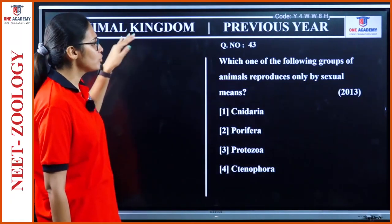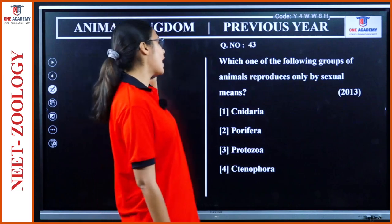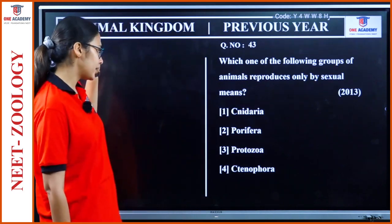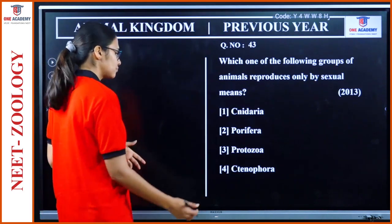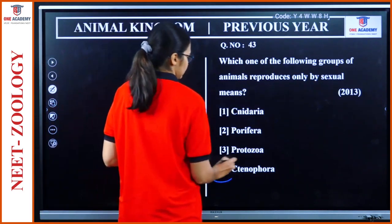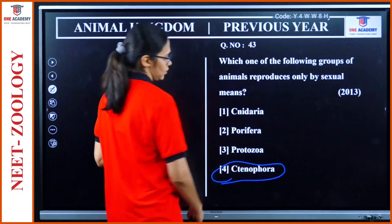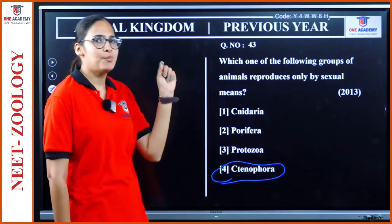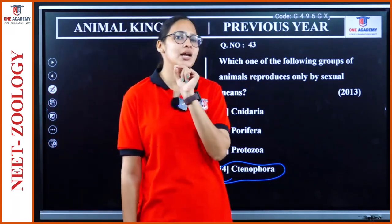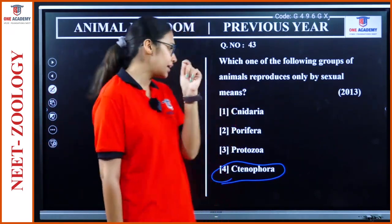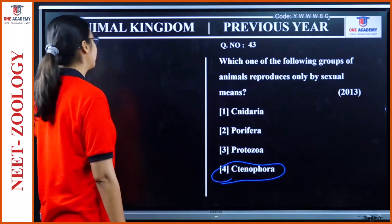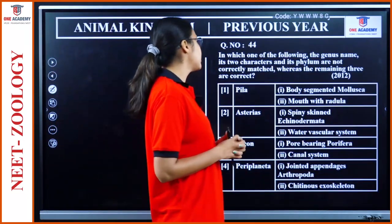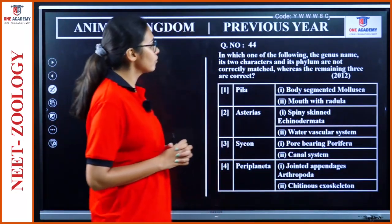Question 43: 'Which group of animals reproduces only by sexual means?' Xenophora — Porifera — is the answer, as they also reproduce sexually. Cnidaria can reproduce both asexually and sexually.